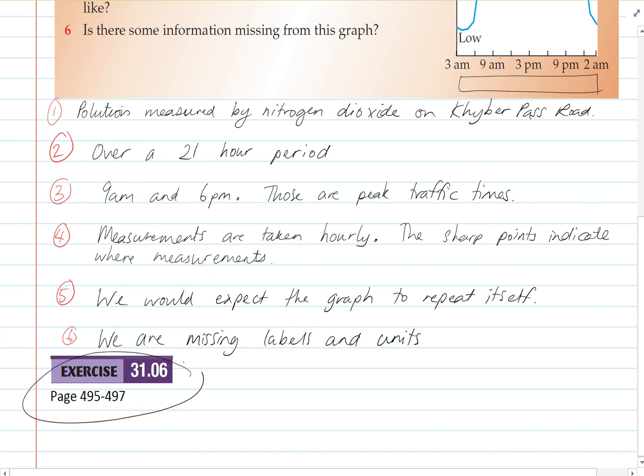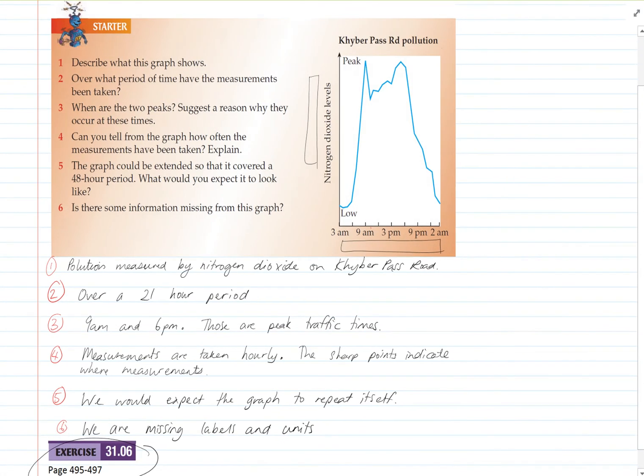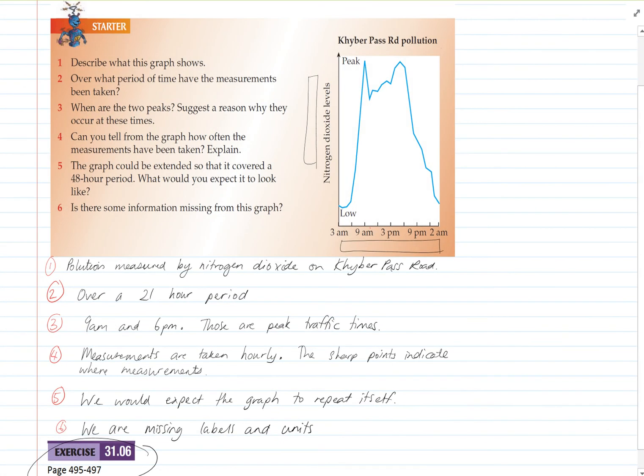And that's it really. So exercise 31.06 will have some time series data for you to look at. And try and interpret it using a bit of common sense. And you may need to write some sentences for this. Thank you.